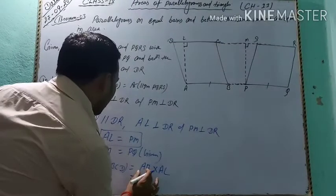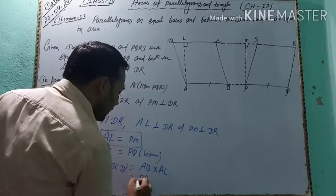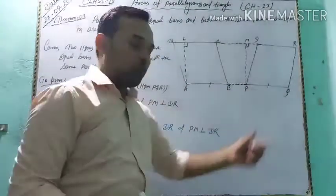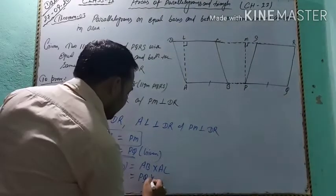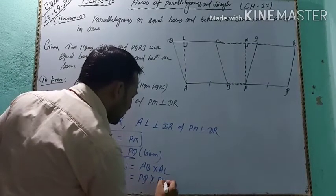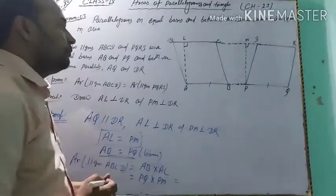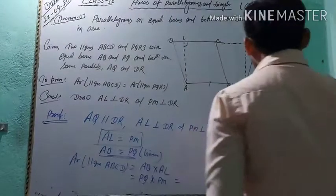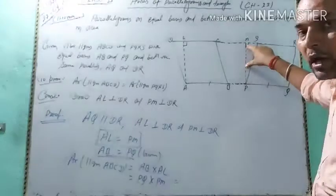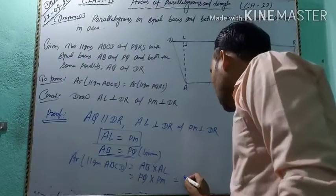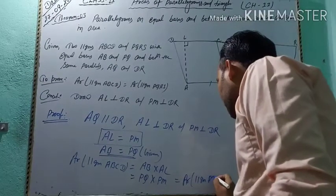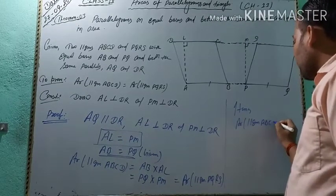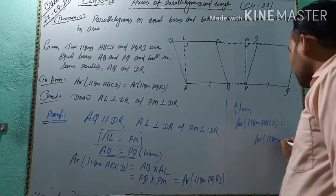Since AB is equal to PQ, we replace AB with PQ. And since AL is equal to PM, we replace AL with PM. So the area becomes PQ multiplied by PM. PQ is the base of parallelogram PQRS and PM is the height of parallelogram PQRS. Therefore, area of parallelogram ABCD is equal to area of parallelogram PQRS.